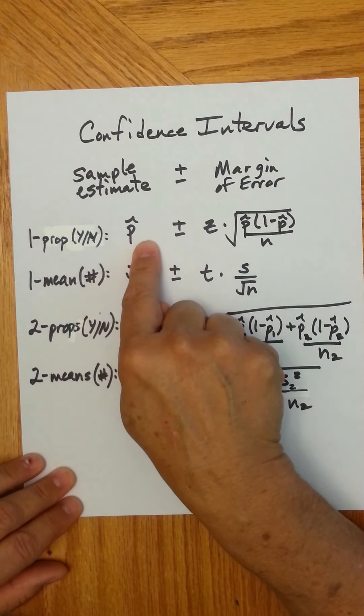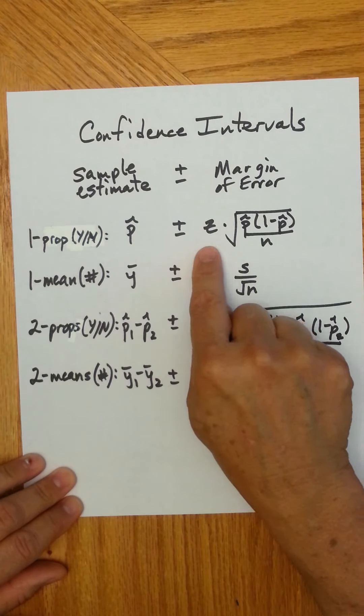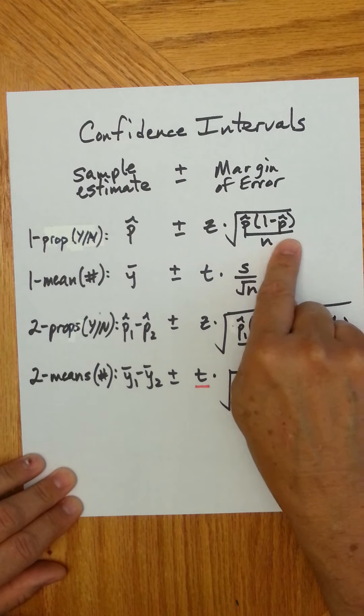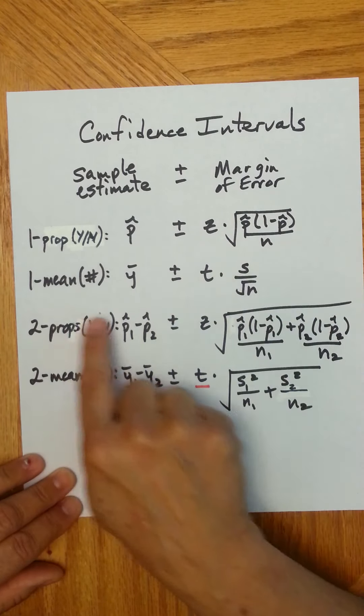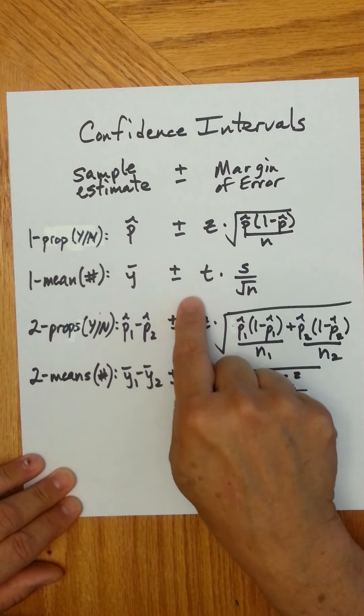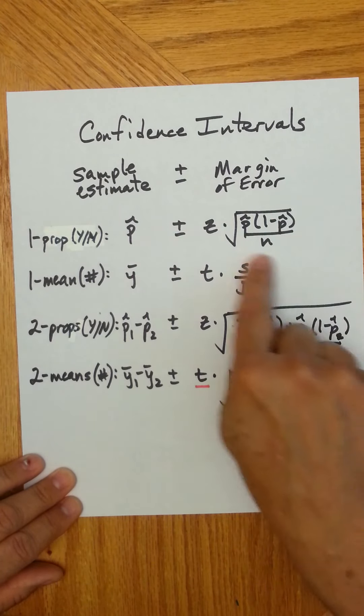For a one proportion, it's p-hat, and then the margin of error is z times its standard error here, square root of p-hat, one minus p-hat over n. For one mean, the sample estimate is y-bar, and then plus or minus for the margin of error, this.